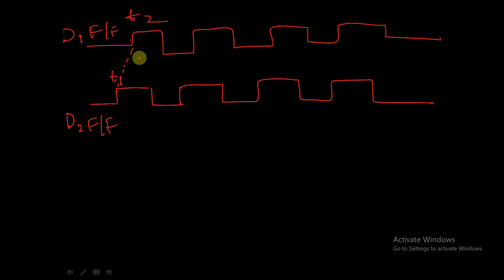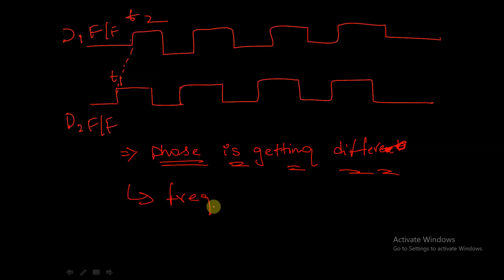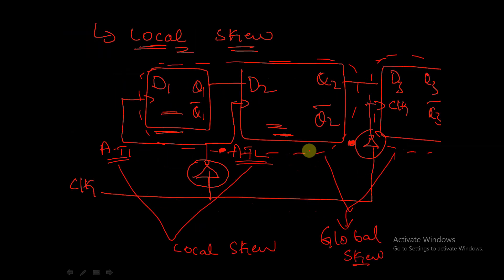In the case of skew — whether positive or negative — you can observe that the phase is getting deferred in the clock signals of the two flip-flops. Only the phase is getting deferred, but the frequency is not changing. Frequency remains the same; only the phase is deferred in the case of skew.